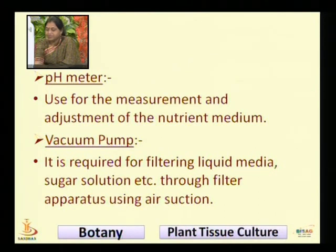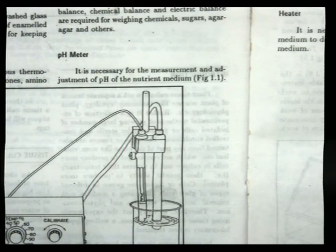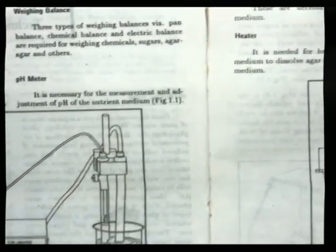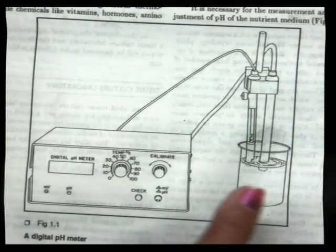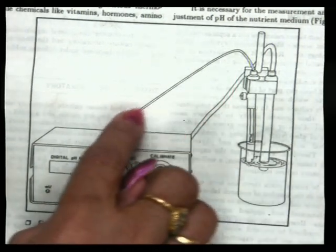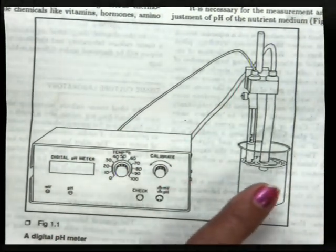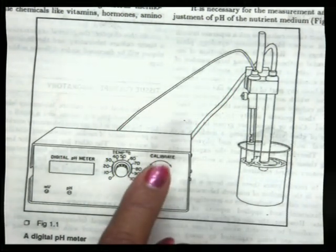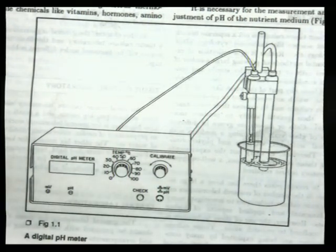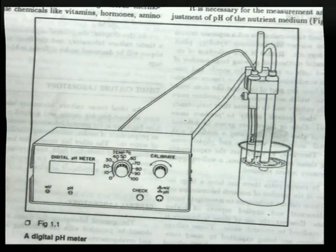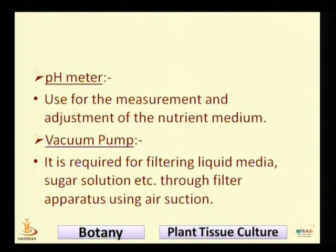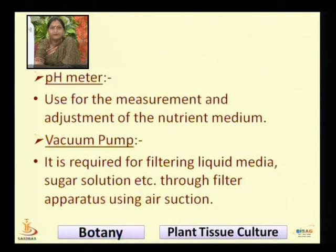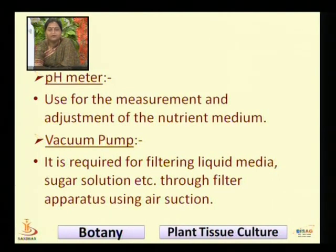Now we are talking about the pH meter. Here is the figure of the pH meter. Any solution is placed beside this instrument and two wires connected to the machine allow us to identify the pH — whether it is in an acidic medium or a basic alkaline medium. The pH meter is used for the measurement and adjustment of the nutrient medium.